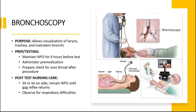Bronchoscopy is used to visualize the larynx, trachea, and mainstem bronchi. It can also be used to obtain tissue biopsy, apply medication, aspirate secretions for laboratory examination, or remove a mucus plug causing obstruction or an aspirated foreign object. Explain the procedure to your client. Maintain NPO for six hours before the test. Inspect the mouth for any infection. Give diazepam, midazolam, meperidine, or muscle relaxants, and atropine to decrease mucus production. Remove any dentures and prepare the client for possible hoarse throat after the procedure.